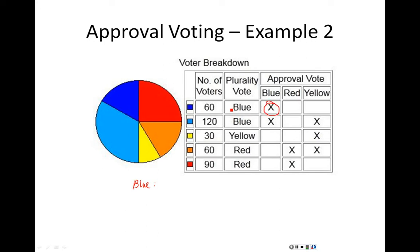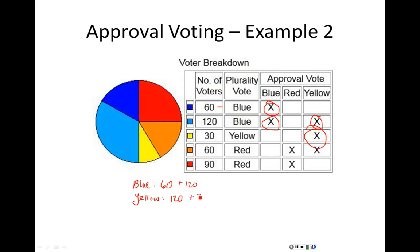So in this case, this blue ballot group had 60 voters associated with it, so there are 60 approval votes for blue only. The next ballot, represented by the light blue, had 120 voters — so 120 approval votes for blue as well as 120 approval votes for yellow. We add 120 to blue's count and also give 120 to yellow. Those 120 votes ended up in two different categories, and that's totally fine — it's just the way the system works. The next group had 30 voters who voted only for yellow, so we add 30 to the yellow category. Then there were 60 voters who approved of both red and yellow, so we add 60 more to yellow.